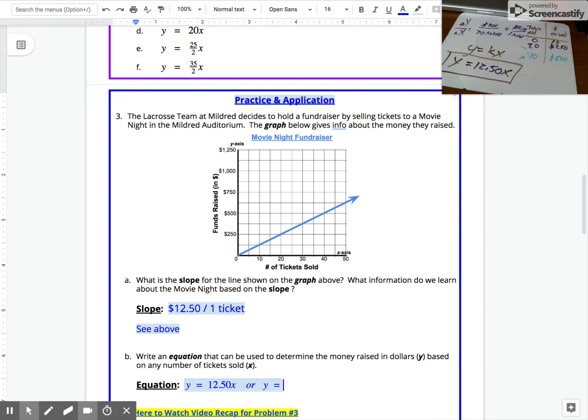You could also say y equals 25 over 2 multiplied with x, but most of you are probably going with y equals twelve point five x, which means twelve dollars and fifty cents per ticket equals our total cost.